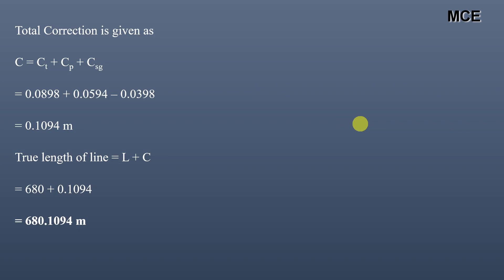After applying the corrections, the true length of the line is greater than the measured length. This is how we apply tape corrections for steel tapes. I hope this solution was clear. If you liked this video, please subscribe to my channel and share it with your friends. Thanks for watching, see you in the next video.